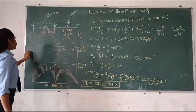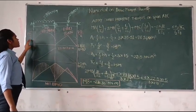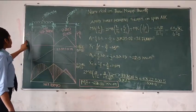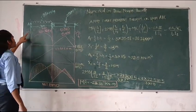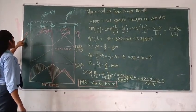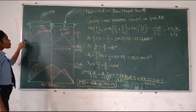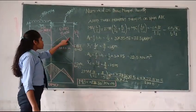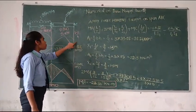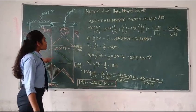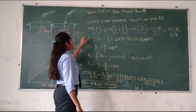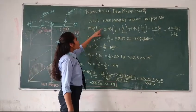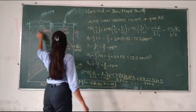Now we have to apply 3 moment theorem on span ABC. For calculating BMD, the formula is WL squared by 8. W is 35 into 3 squared divided by 8. For cantilever, the formula is WL by 4.